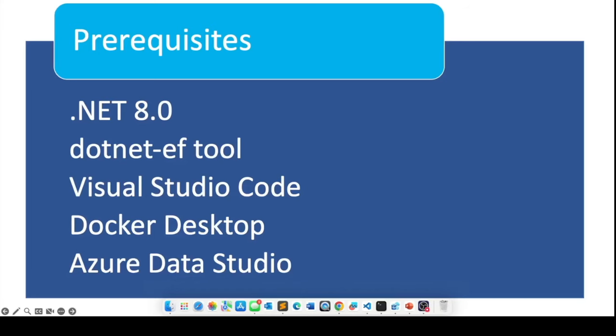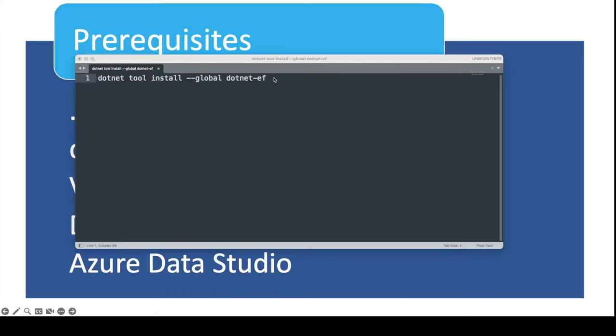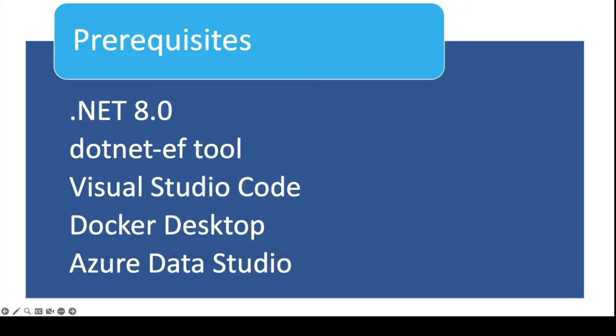In order to continue with this exercise, these are the prerequisites. You need to have .NET 8.0 and the .NET EF tool. If you do not have the .NET EF tool, you can easily install it by running this command from inside a terminal window. You will also need Visual Studio Code, Docker Desktop — because Aspire creates containers in Docker Desktop for the database — and Azure Data Studio to look at the contents of our SQL Server database.